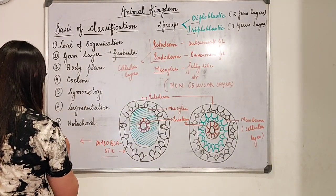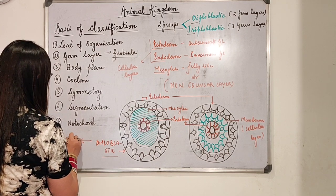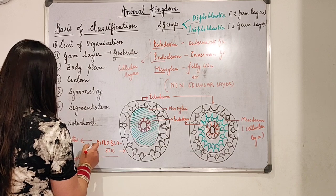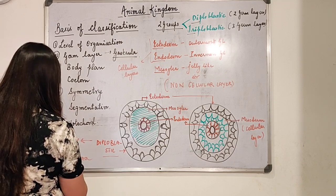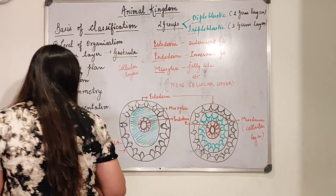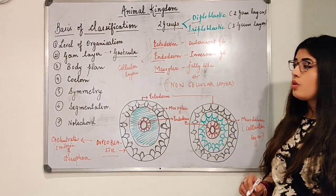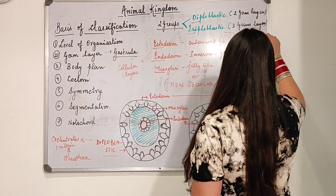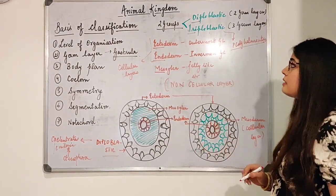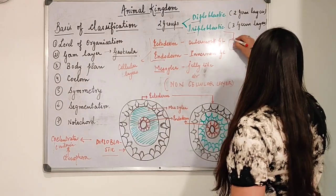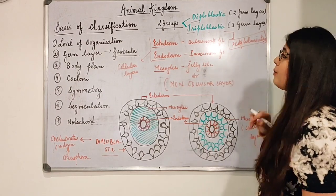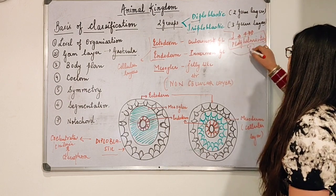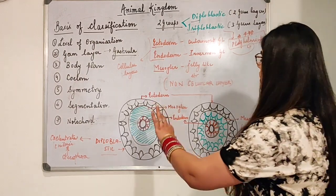Examples of diploblastic organisms are Coelenterata and Ctenophora. Another name for Coelenterata is Cnidaria. Triploblastic was first observed in Platyhelminthes. This is very important from an exam point of view: triploblastic layers were first seen in the phylum Platyhelminthes.